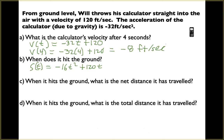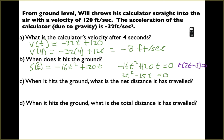Now we find the zeros of the position function. Set negative 16t squared plus 120t equal to zero. Factor out negative 8 to get 2t squared minus 15t equals zero, then factor out t: t times (2t minus 15) equals zero. Our solutions are t equals 0 and t equals 7.5. It's at the ground at t equals 0 when tossed, and hits the ground again at t equals 7.5 seconds.